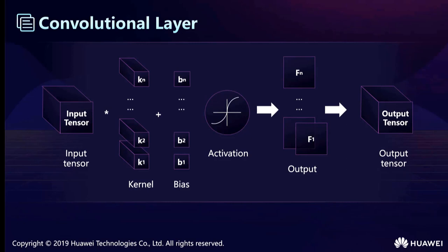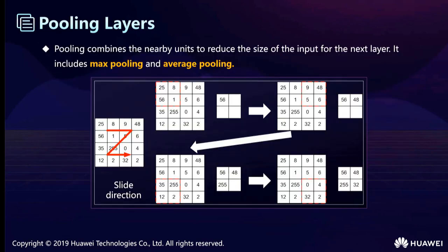The output of the previous layer is used as the input of the current layer. It is convolved with the convolutional kernels of that layer to produce the output. The convolutional kernels of each layer are weights to be learned, similar to fully connected networks. After convolution, results are biased and passed through activation functions before being input to the next layer. Pooling combines nearby units to reduce the size of the input for the next layer — it includes max pooling and average pooling. Max pooling selects the maximum value in a small square area as the representative of that area.